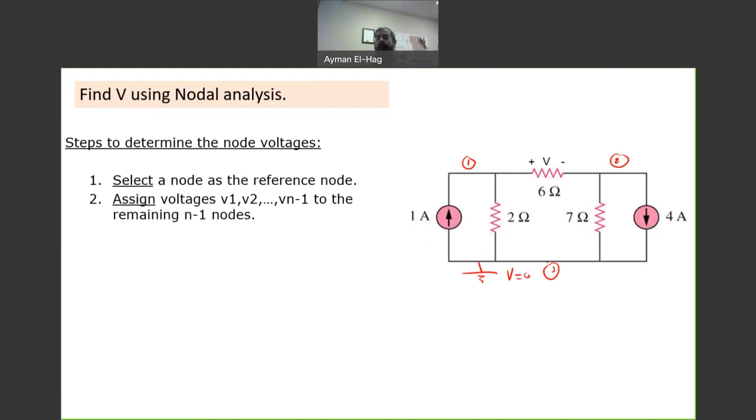Number two. Now, we will assign voltages to the other nodes. So, I will have here V1, V2. Here, I don't. Why? Because I already know the voltage.